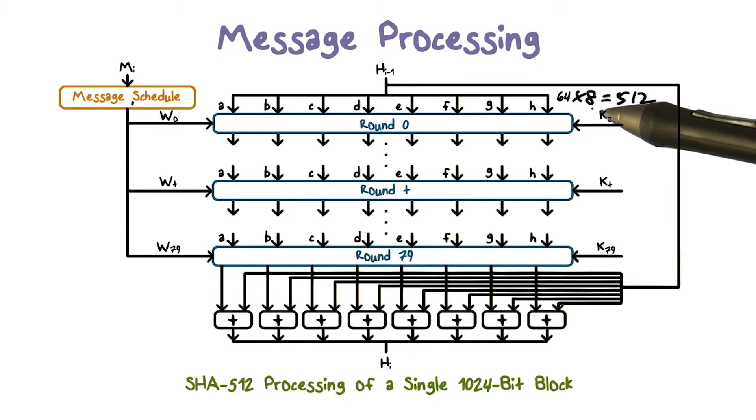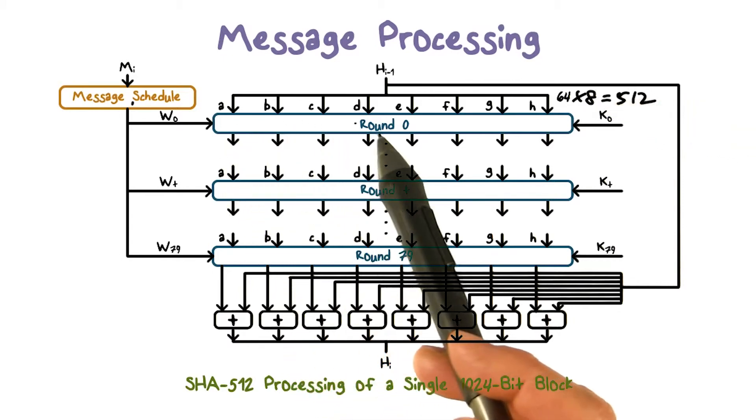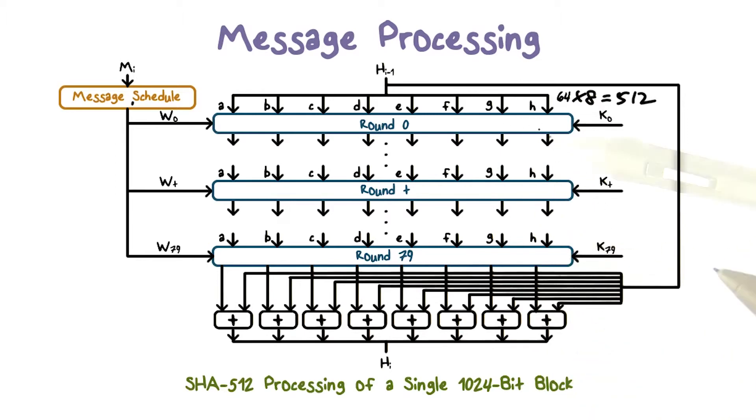And it is divided into eight 64-bit values. And they are A, B, C, D, E, F, G, and H. Again, the processing involves 80 rounds.